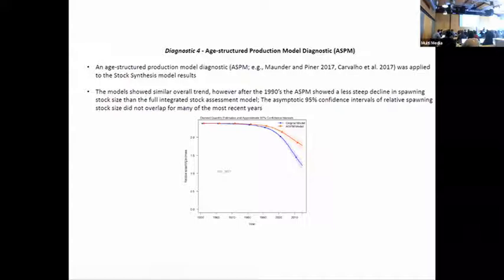We also applied the usual age structure production model - this is the first step in the Maunder-Piner flowchart. In Stock Synthesis you can detune the model to be an age structure production model and you can run that model and compare it to the full model. This is relative biomass over time - if those deviate, it's suggesting that your model is not picking up the production function correctly and that's a warning sign that you may want to go back into the model and revisit the stock-recruit production and the natural mortality.